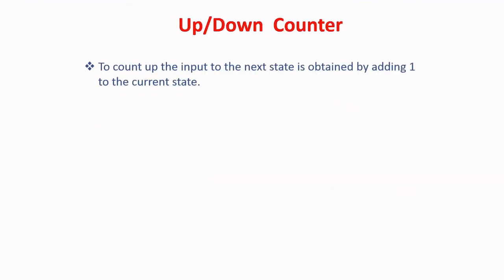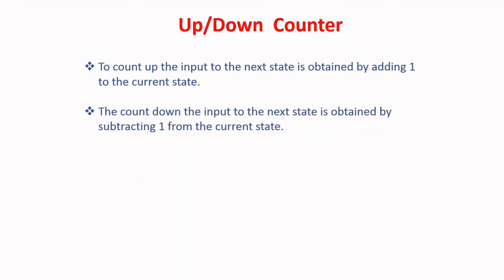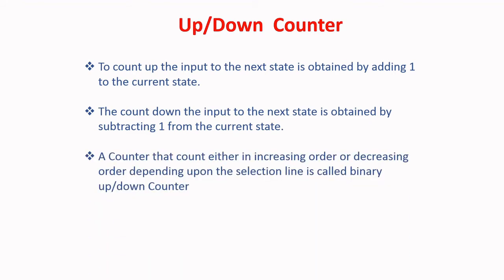Up-Down Counter: to count up, the input to the next state is obtained by adding 1 to the current state. To count down, the input to the next state is obtained by subtracting 1 from the current state. A counter that counts either in increasing or decreasing order depending upon the selection line is called a binary up-down counter.